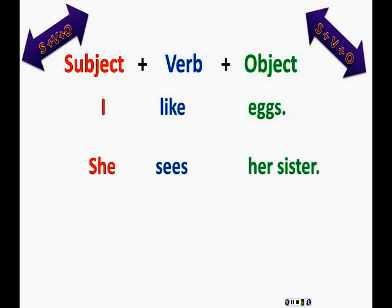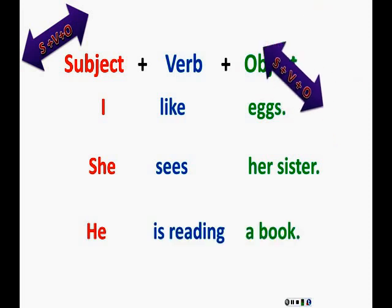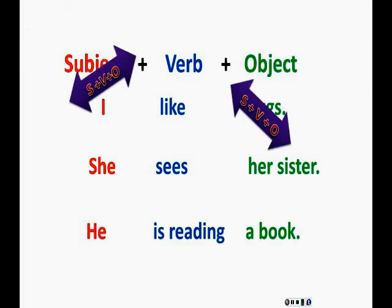She sees her sister. He is reading a book. These all have the same structure. Subject, verb, object.